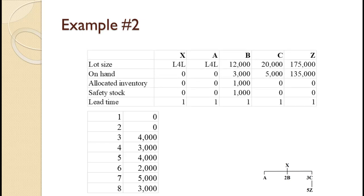Item X is produced lot for lot with no on-hand inventory and a lead time of one period. Component A is purchased lot for lot with no on-hand inventory and a lead time of one period. Component B is purchased in lots of 12,000; there are 3,000 on hand, but 1,000 are allocated inventory and 1,000 are safety stock, with a lead time of one period. Component Z is purchased in lots of 175,000; there are 135,000 on hand with no allocated inventory or safety stock, and a lead time of one period. Complete the MRP plan for these items.